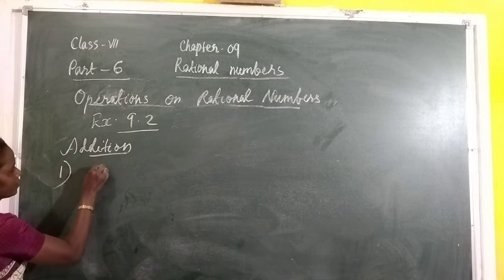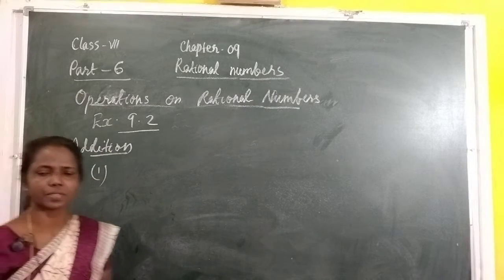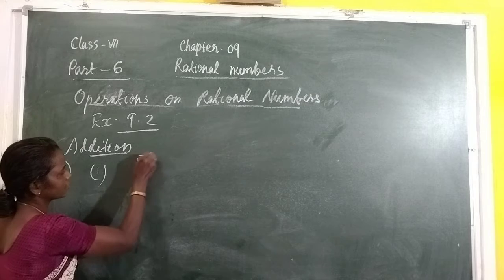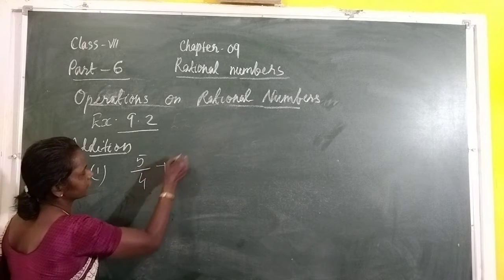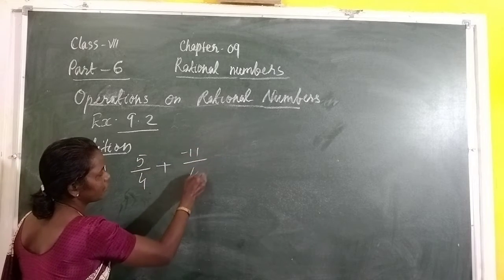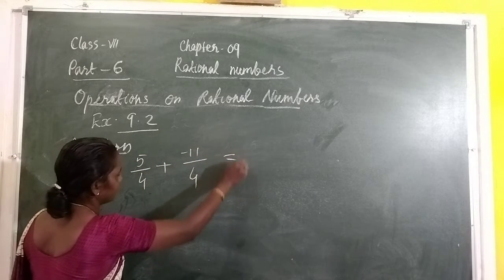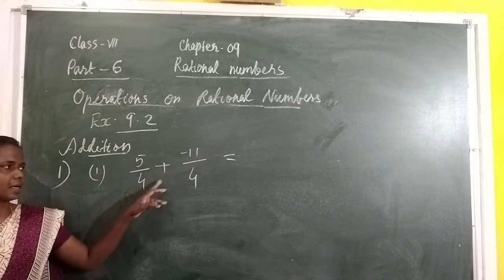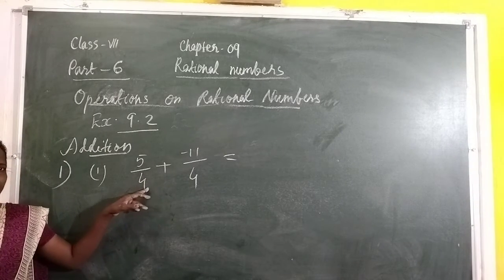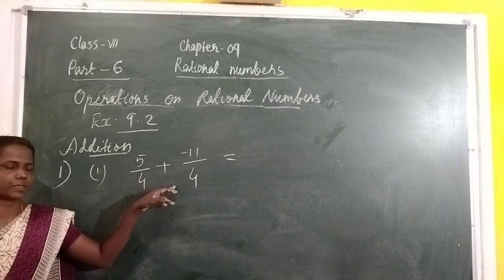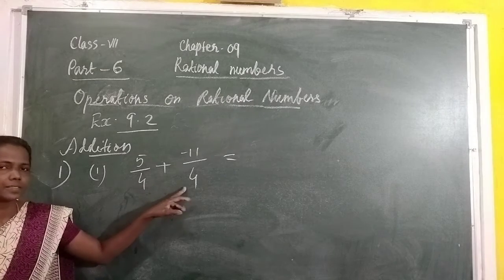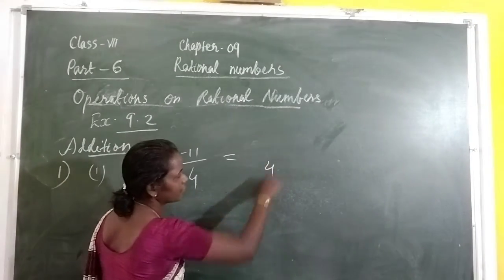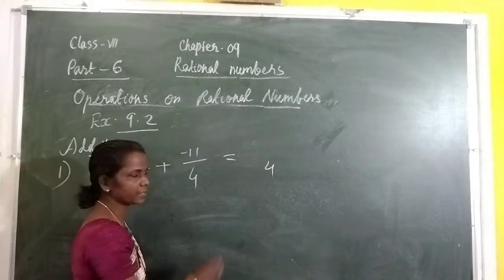Question number 1: 5/4 plus negative 11/4. Here, how many rational numbers? Two rational numbers are given. First we look at the denominators — denominators are same. So we write that same denominator: 4.